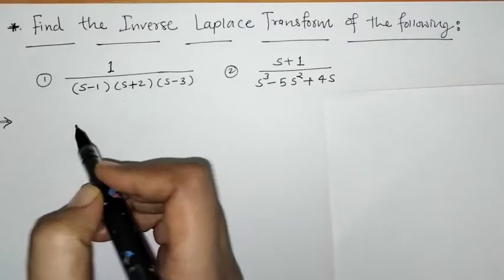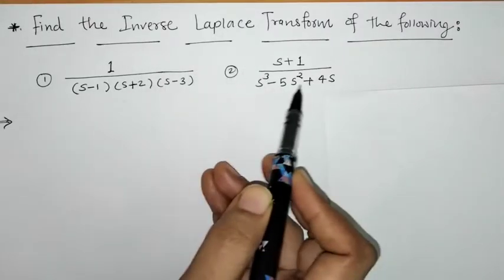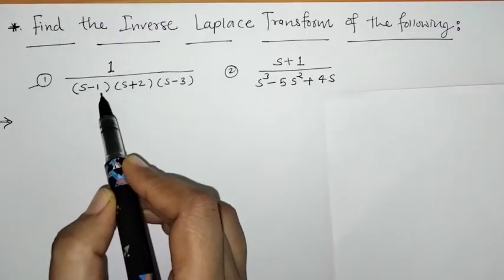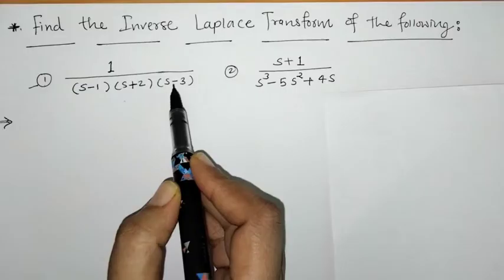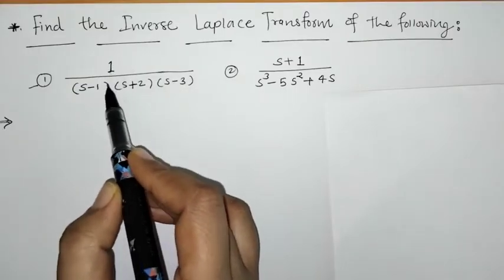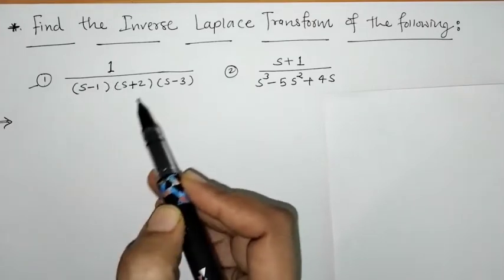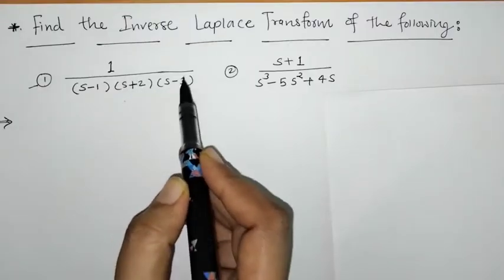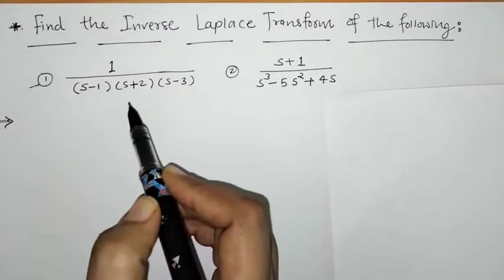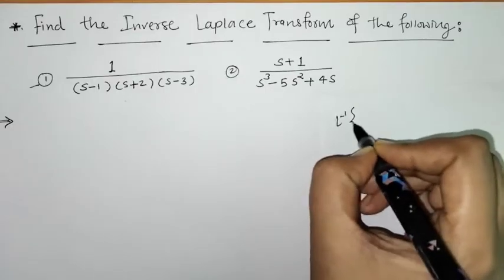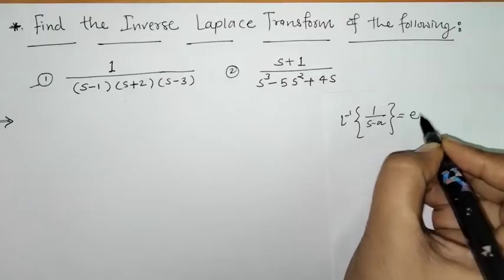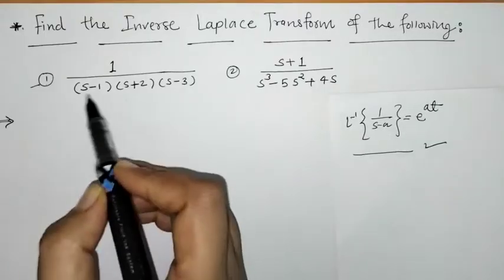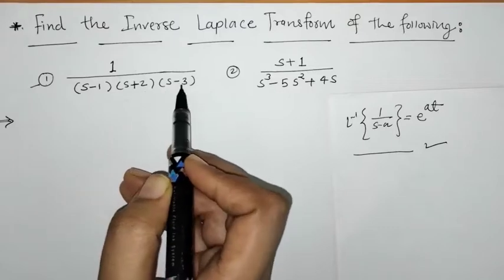Hello everyone, welcome to Unlock Maths. Today we have to find the inverse Laplace transform of these functions. For the first function, we have 1 upon (s minus 1)(s plus 2)(s minus 3). We can find the inverse Laplace of 1/(s-1), 1/(s+2), and 1/(s-3) using the formula: L inverse of 1/(s minus a) equals e raised to at.